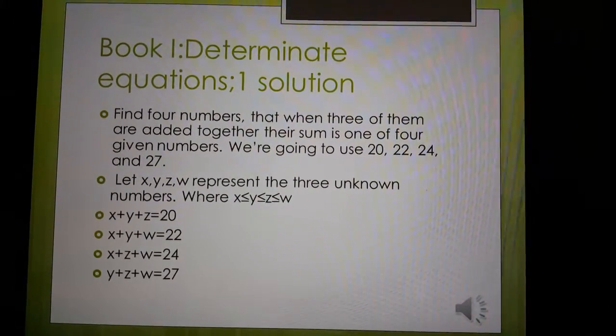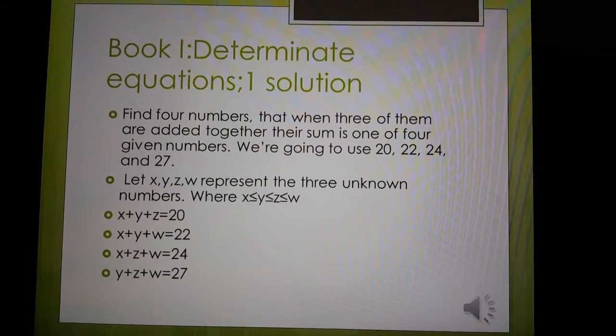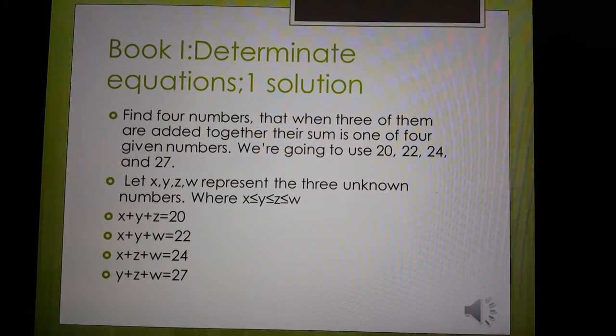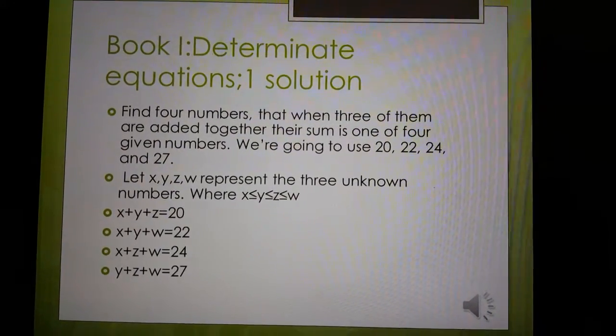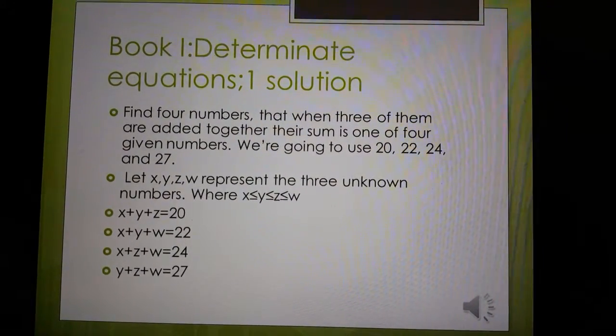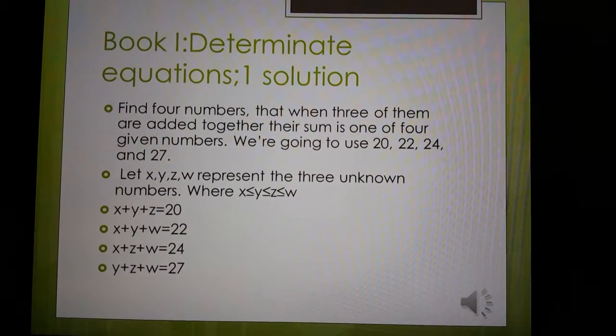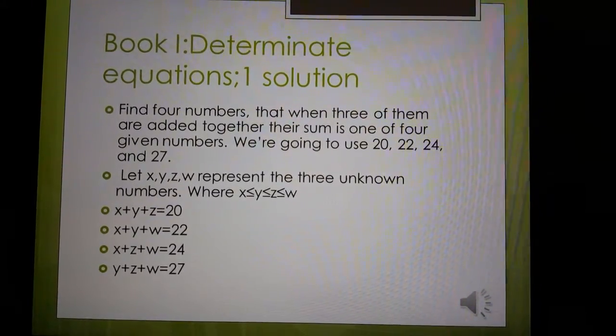You could use trial and error guessing, but it's not very dependable. So students tried to look at it in an algebraic way, and they found that if x is less than or equal to y, and y is less than or equal to z, and z is less than or equal to w, then they can put it in the equation...